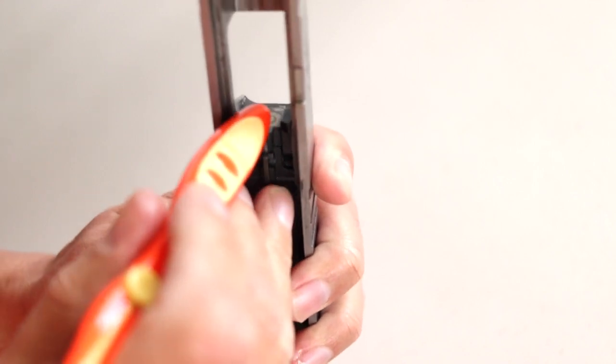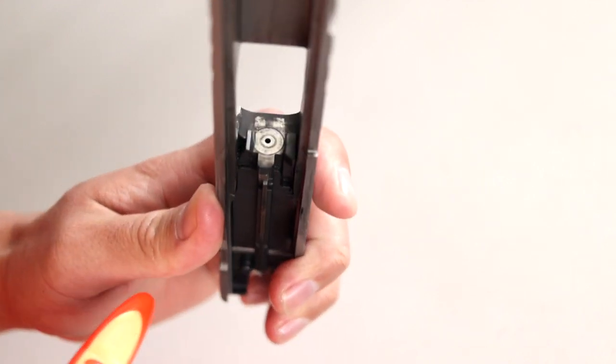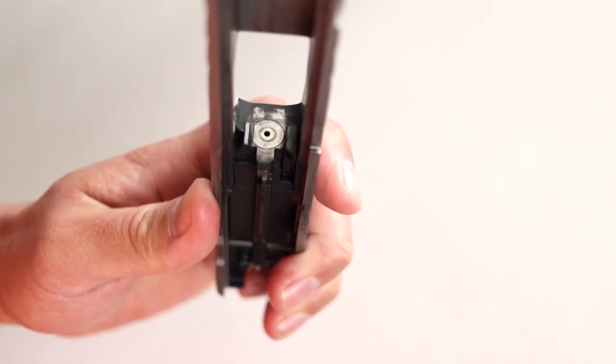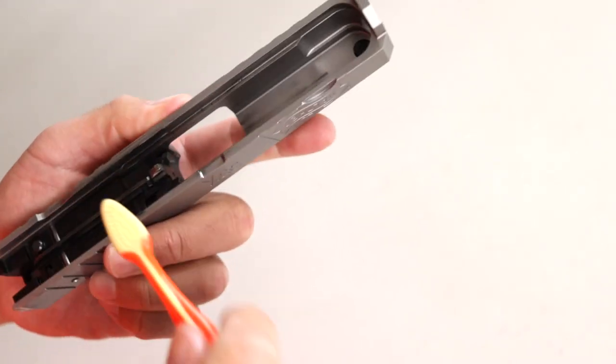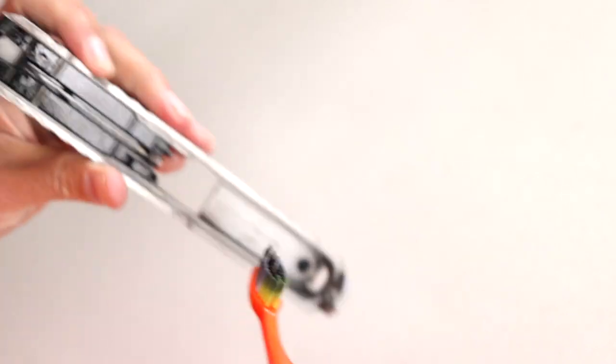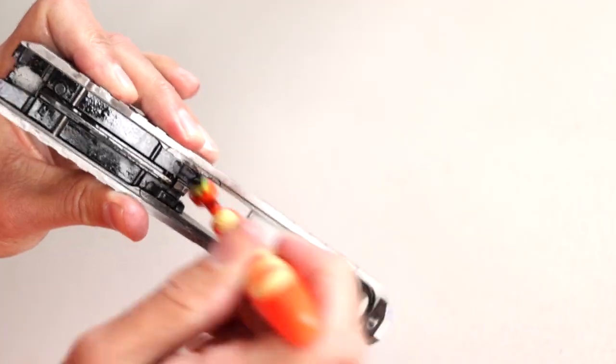Scrub the breech face really well, but make sure you don't leak CLP down into that channel that the firing pin comes out of. I'm being really careful cleaning the breech face, but if you think you need to, turn the slide pointed muzzle downward just to make sure CLP won't leak down into it. Make sure you get behind the extractor with your brush. Here's a close-up.